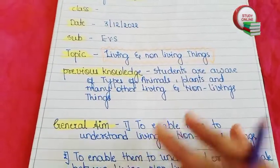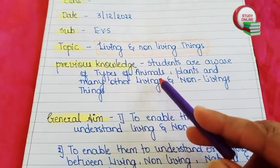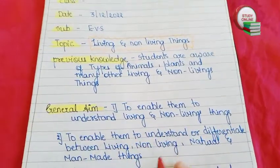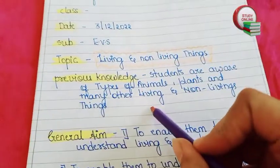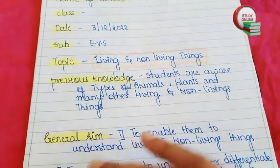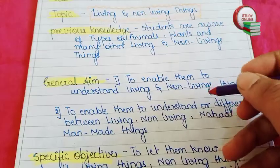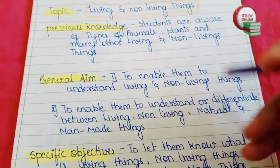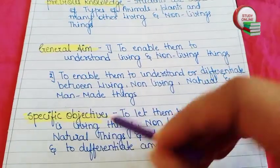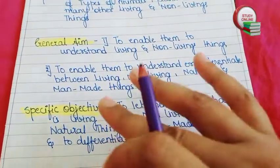Now let's see what we have to write for previous knowledge. Students are aware of various names of animals, plants, and many other living and non-living things. Basically they are not yet aware of the two terms — living things and non-living things — but they are already generally aware of examples like animals and plants. We want to enable them to understand and differentiate between living things, non-living things, natural things, and man-made things.